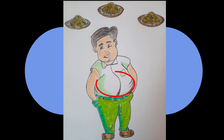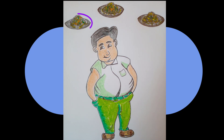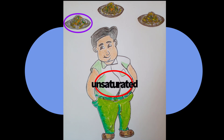Suppose the stomach can contain only three plates full of fried rice. Let the person eat one plate full of fried rice out of three — it still has the capacity to hold two more plates. The stomach is not 100% satisfied with fried rice; it needs two more plates to get satisfied. This unsatisfied state means the stomach is unsaturated with fried rice.